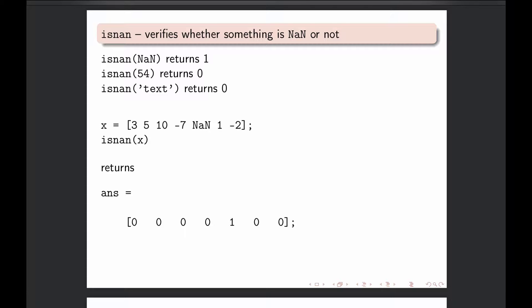And for that reason, there is a function called isNAN. So that basically verifies whether something is NAN or not. So if you use isNAN on a NAN, then it returns yes, which means one in MATLAB language. If you ask isNAN on a number, it will say zero because it is not, not a number.